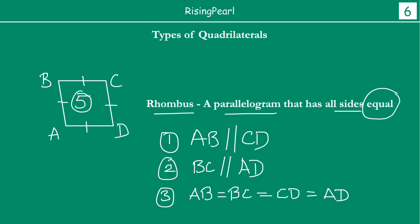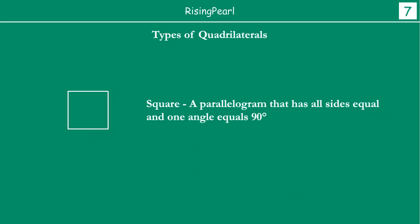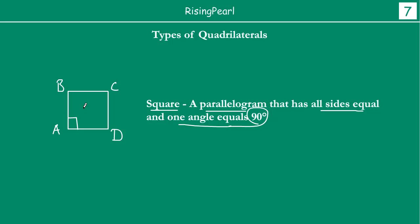Next quadrilateral dosta is a square. Aapko malum hai dosta — agar we take a parallelogram that has all sides equal and one angle is 90 degrees, then it is a square. So ABCD where AB is parallel to CD, BC is parallel to AD, AB = BC = CD = DA, and you have one angle 90 degrees — agar aisa hai dosta, then this quadrilateral is called a square.